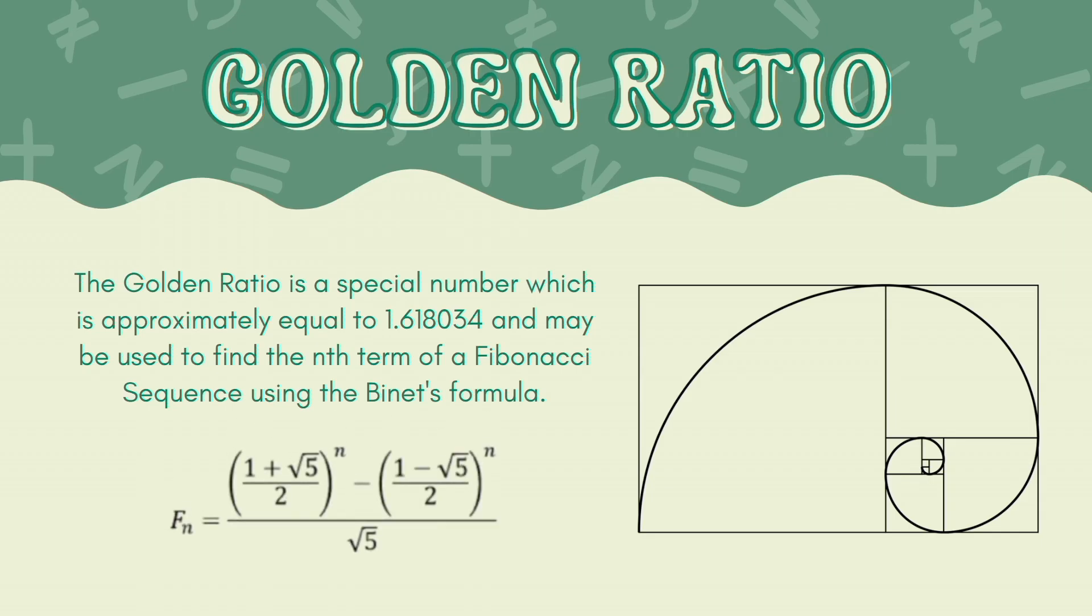The golden ratio shows up when you divide the Fibonacci number by the one before it. For example, 233 divided by 144 is about 1.618.